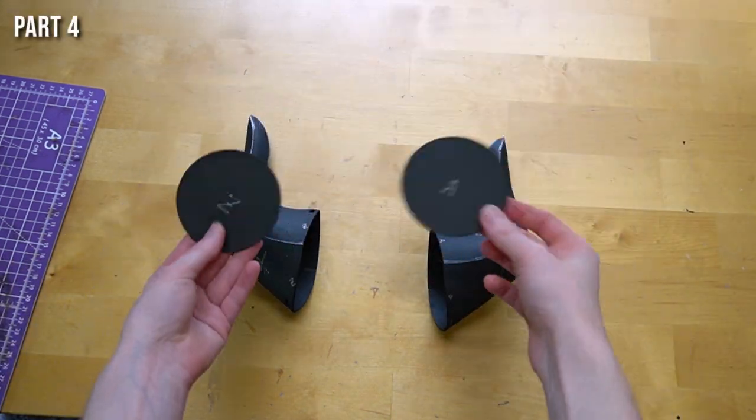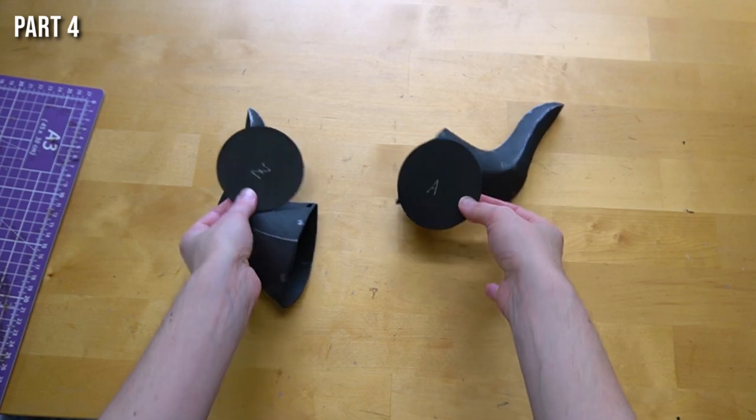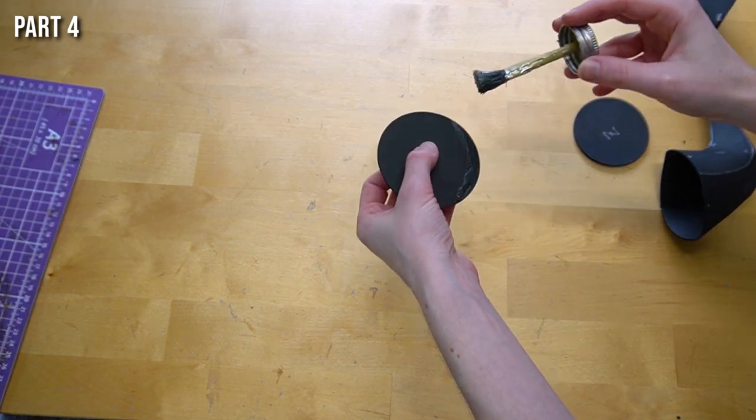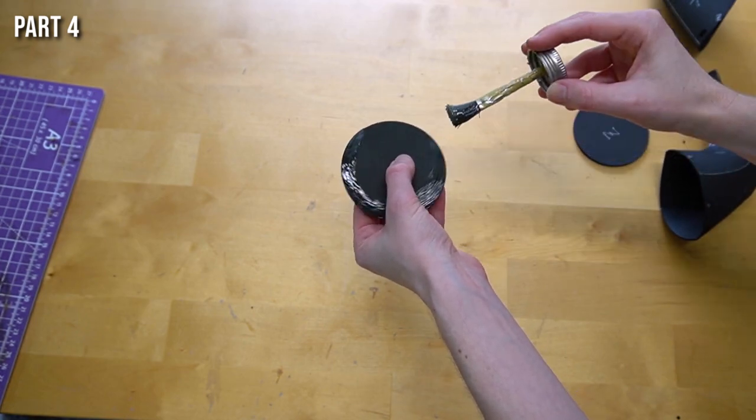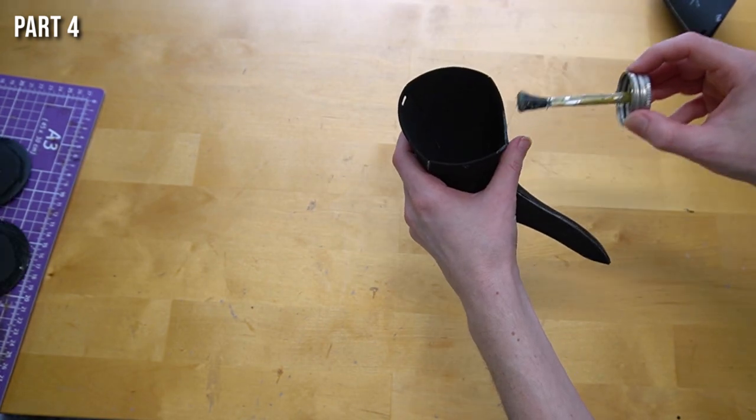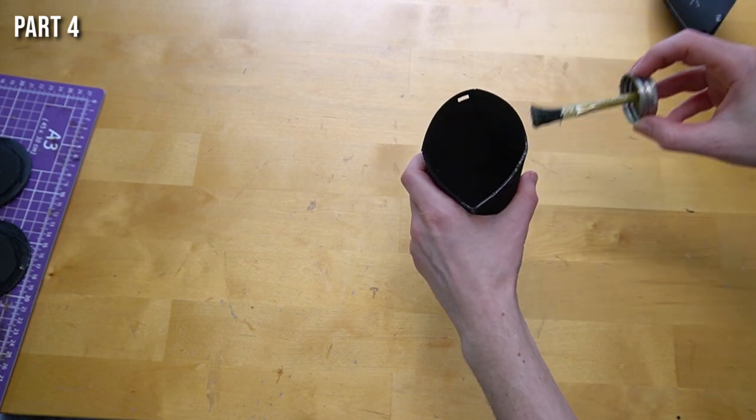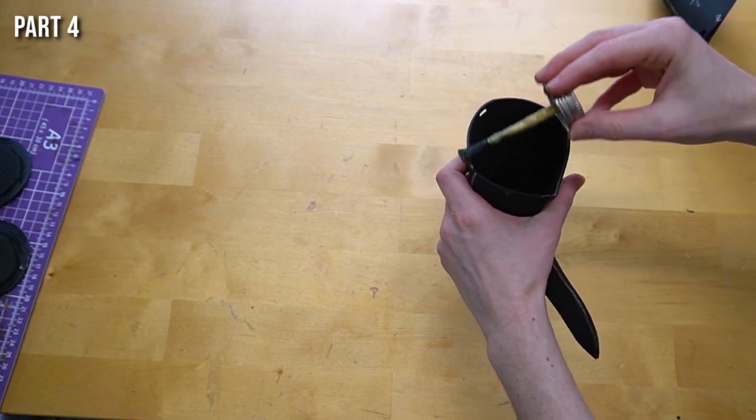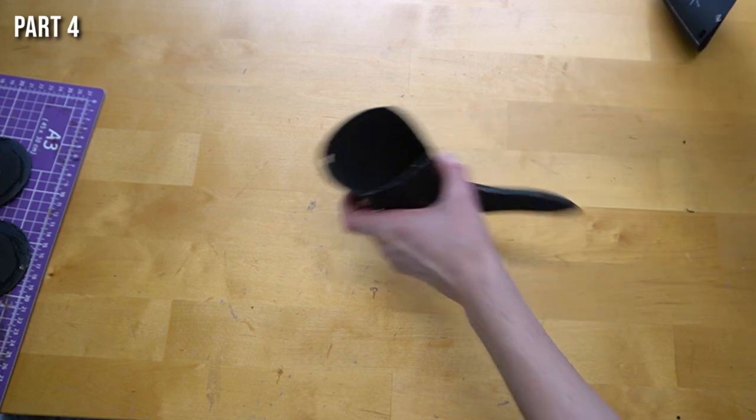Now for attaching the last EVA foam part. And these are going to be your circle base pieces. And for the glue onto the circle part, you're going to apply it onto the face all the way around. And for our horn part, you're going to apply the glue to the edge. Again, we're going to wait for the glue to dry and then apply a second coat of glue.